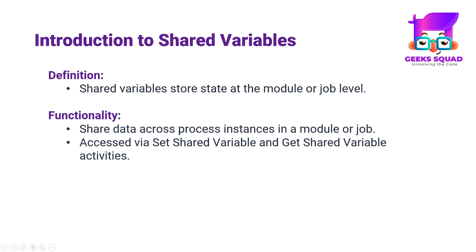Shared variables play a crucial role in preserving state within an application. These variables are used to save the state at the module level or for the duration of a job. Their ability to facilitate data sharing across various process instances associated within a module or a job is key. Process instances can read or update data stored in shared variables, making it accessible to other instances within the same module or job.